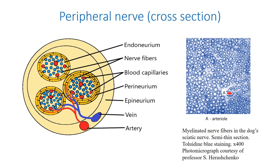The perineurium divides the nerve trunk into fascicles and surrounds each nerve fascicle. It consists of several layers of flattened cells. The quantity of layers depends on the fascicle diameter — the larger the diameter, the more the layers. The perineurium, as well as endo- and epineurium, are often called connective tissue sheaths. In fact, the cells they are composed of have the ability to produce collagen fibrils. But perineurial cells are not typical fibroblasts; they are squamous cells joined to each other by tight junctions and surrounded by basal lamina. That is why they are considered epithelioid cells or perineurial glia.